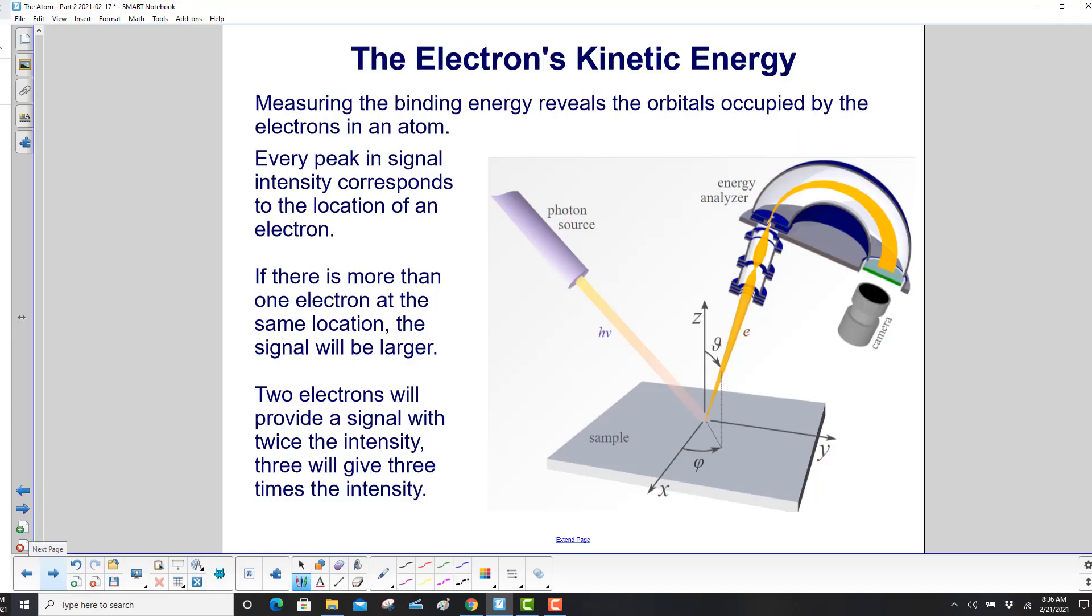Measuring that binding energy by the energy analyzer reveals the orbitals occupied by the electrons in an atom. Every peak in your signal corresponds to the location of an electron. If there's more than one electron at the same location, the signal will be larger. Two electrons will provide a signal with twice the intensity. Three will give three times the intensity.